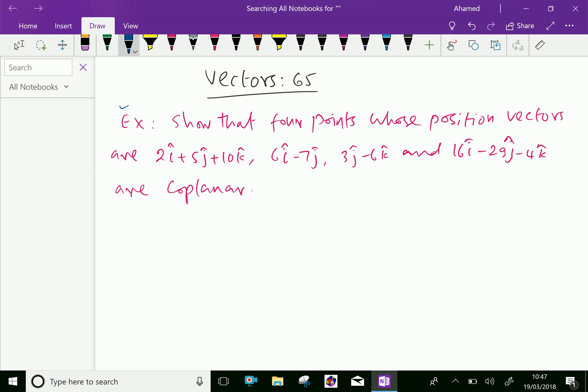Show that four points whose position vectors are 2i plus 5j plus 10k, 6i minus 7j, 3j minus 6k, and 16i minus 29j minus 4k are coplanar.